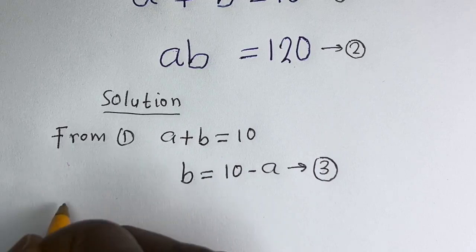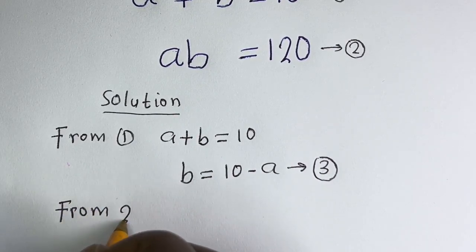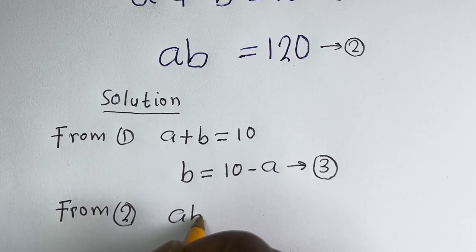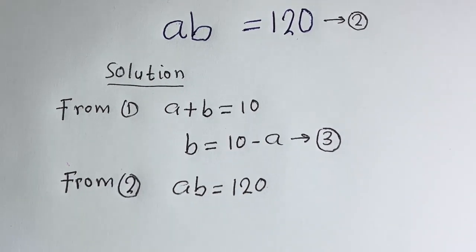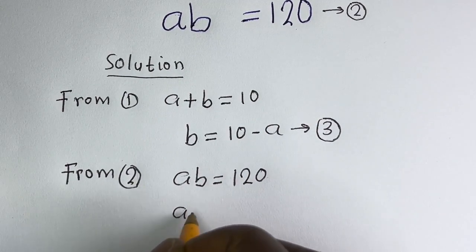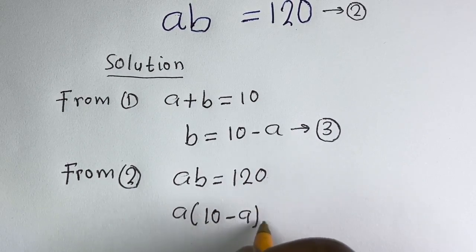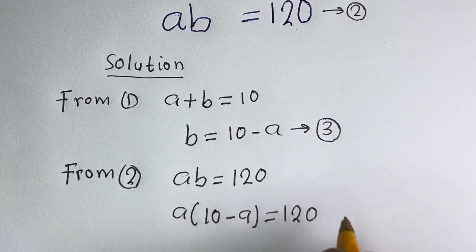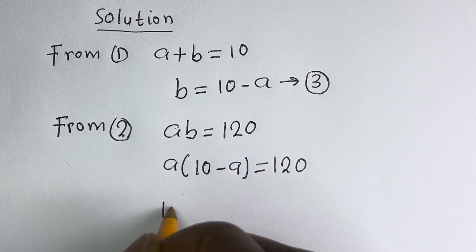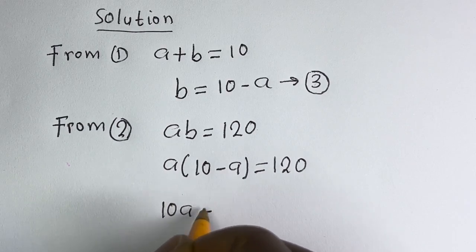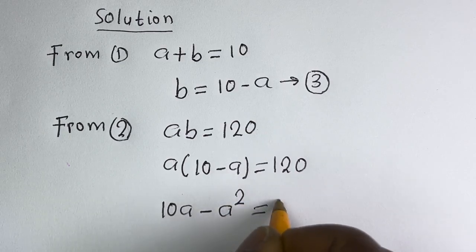From equation 2, AB is equal to 120. Substituting equation 3, A times (10 minus A) is equal to 120. Expanding: A multiplied by 10 is 10A, minus A multiplied by A is A squared, so 10A minus A squared is equal to 120.